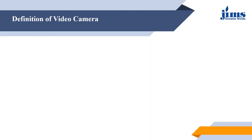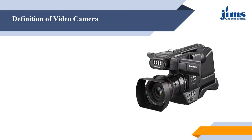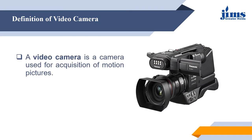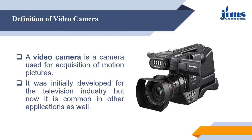First of all, what is a video camera? The definition of video camera: a video camera is a camera used for acquisition of motion pictures. It was initially developed for the television industry but now it is common in other applications as well.